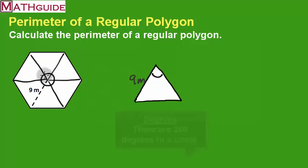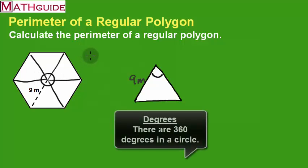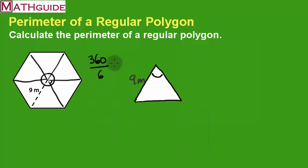Since we know that around a circle is 360 degrees, if I want to find one of those angles, one of these little angles here in the middle, it would be 360 divided by those six parts, which is 60 degrees.